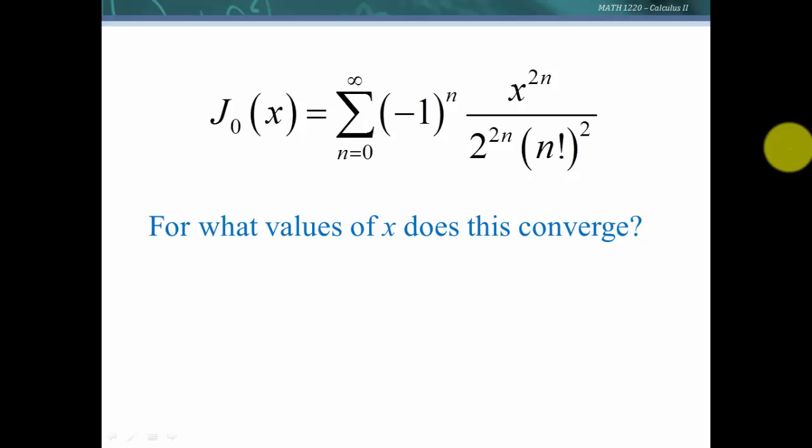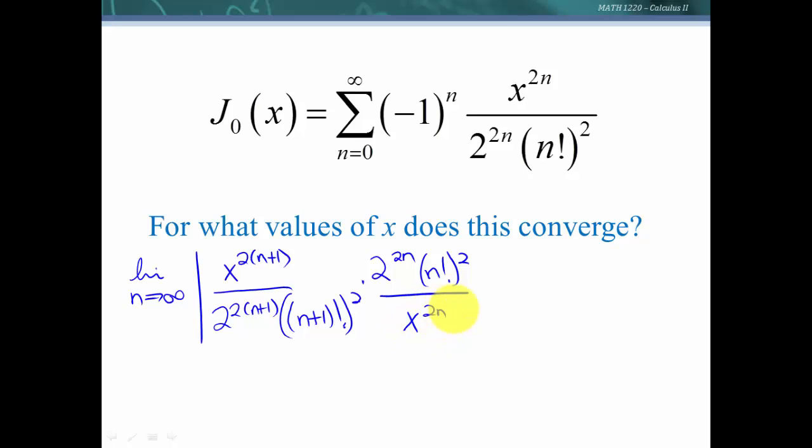Let's apply the ratio test. We have the limit as n goes to infinity of the absolute value. Because we're doing absolute value, we're not going to worry about this negative 1 to the n. So I've got x to the 2n plus 2 over 2 to the 2n plus 2, and then (n plus 1) factorial squared. We're going to divide that by the nth term, so I'll multiply by the reciprocal, which is 2 to the 2n times n factorial squared over x to the 2n. Let's see what we can simplify.